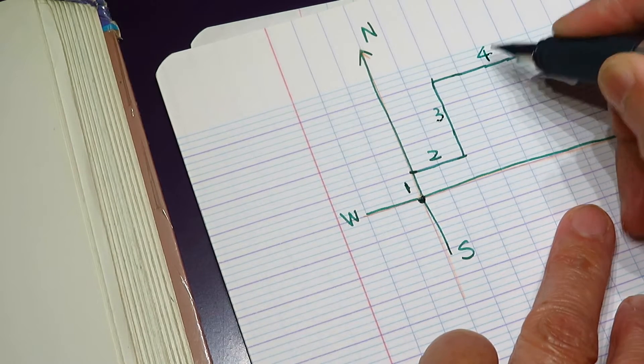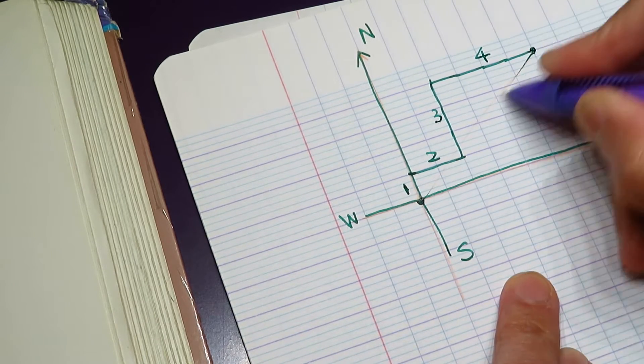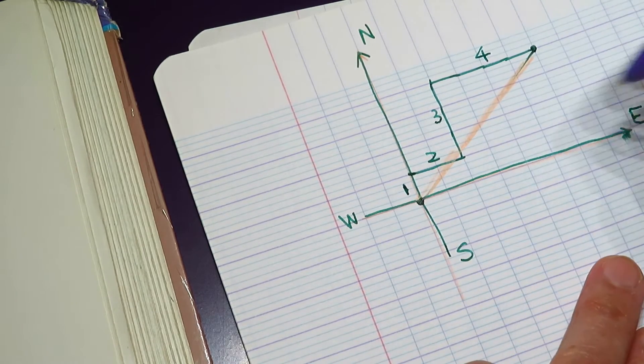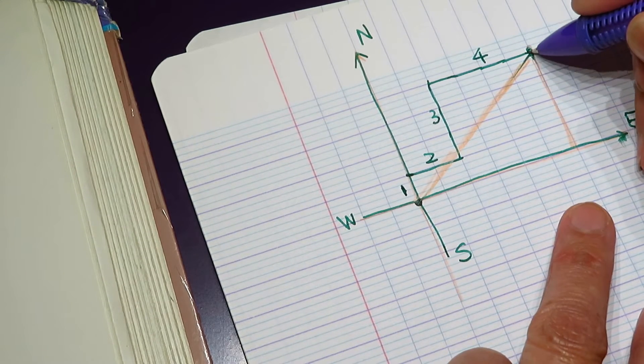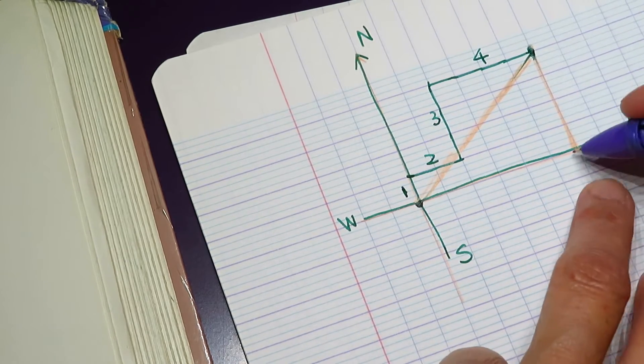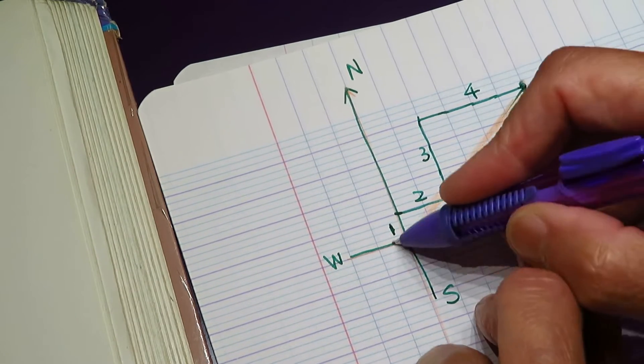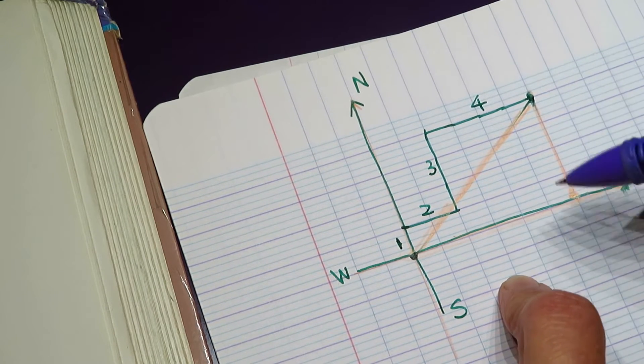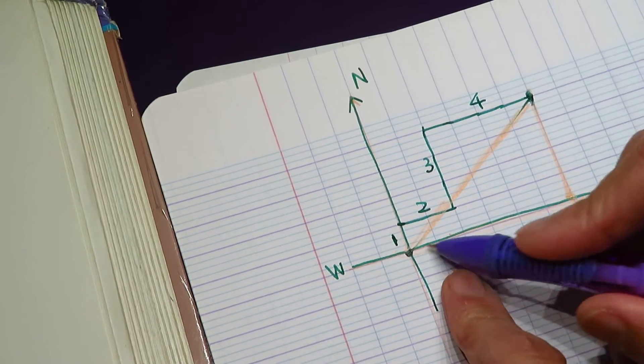And here is four kilometers. Now we want to know the distance from here to here. How far he is from starting. We can understand the distance from his final point to this X axis. This X axis is our imaginary plane.